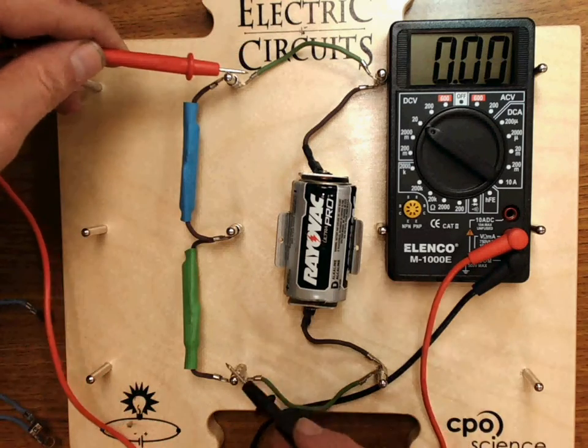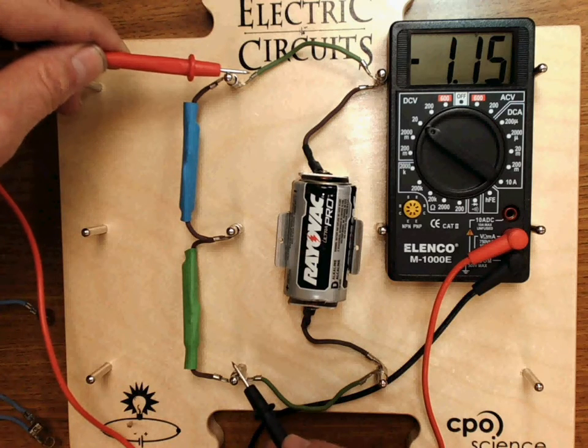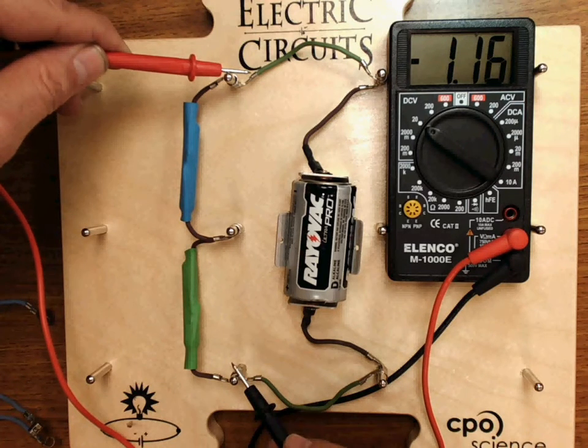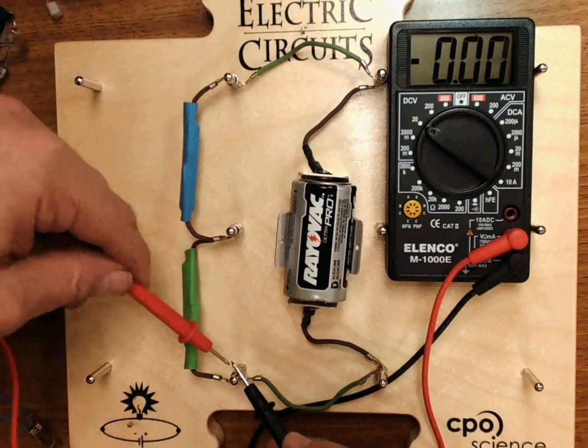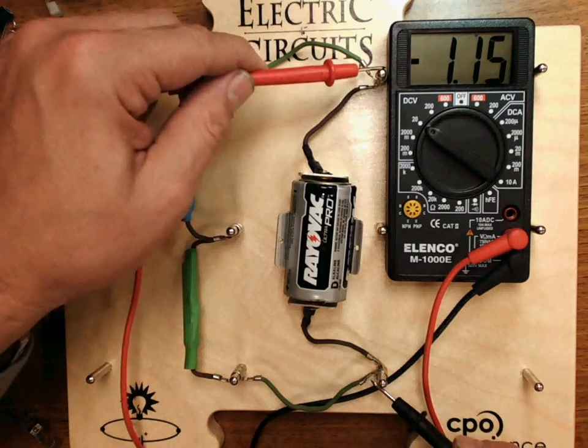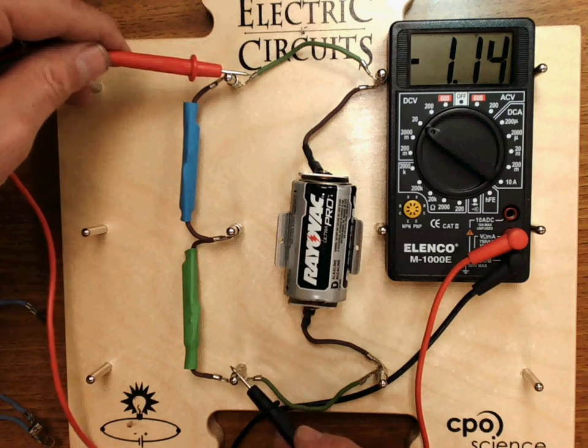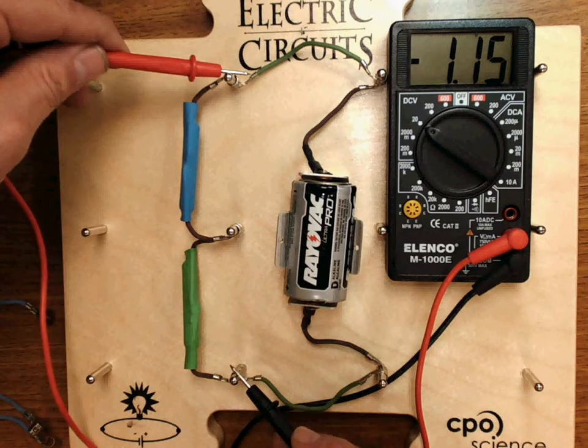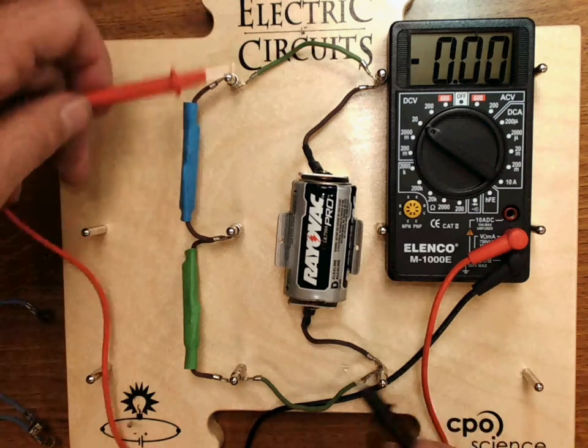I can also measure on these two leads here. I get 1.14, 1.15 volts. This is the same as measuring across the resistors, and it's the same as measuring across the battery, because when we measure across all of the resistors, the total of these has to be the battery voltage, so there's no difference.